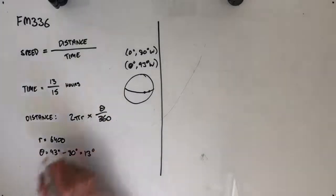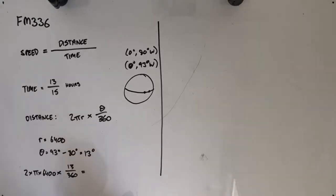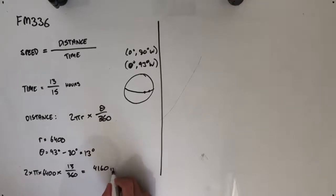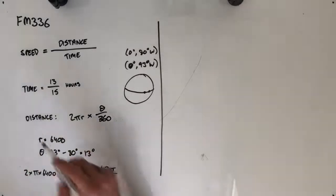Putting this all together, we get 2 times pi times 6,400 times 13 over 360. Chucking this into a calculator gives 4,160 pi over 9, and we'll use this to represent our exact distance.